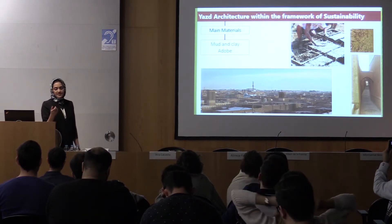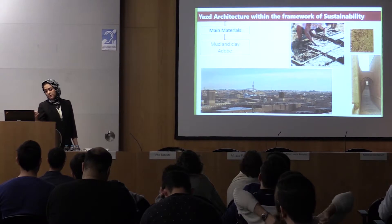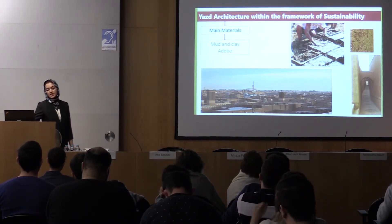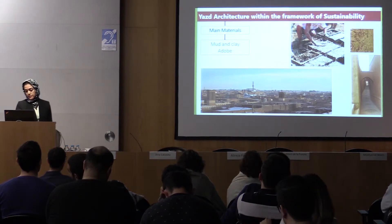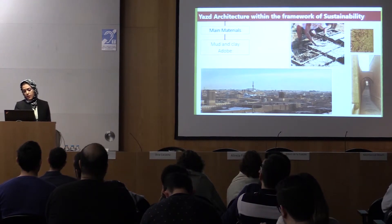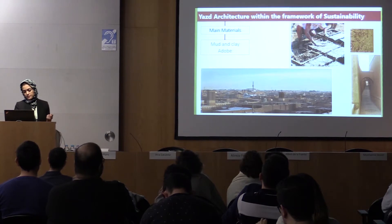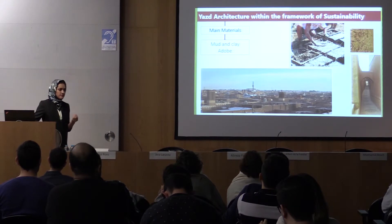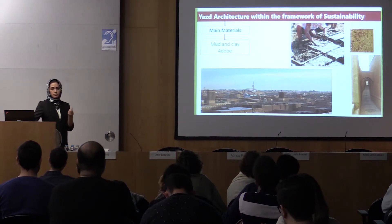When you look at the city from the horizon, you can see a very high compatibility in color — it is pleasant and doesn't annoy the eye. The main material used for the city is mud, clay, and adobe. Adobe has some fiber substances added, for example, for strengthening the material.